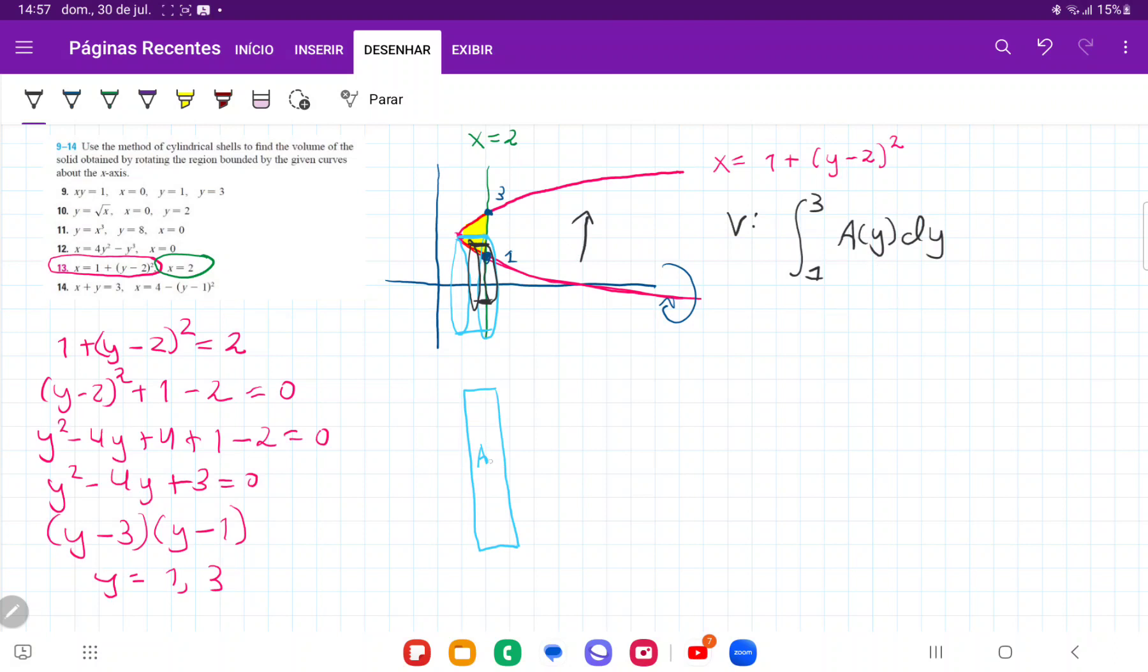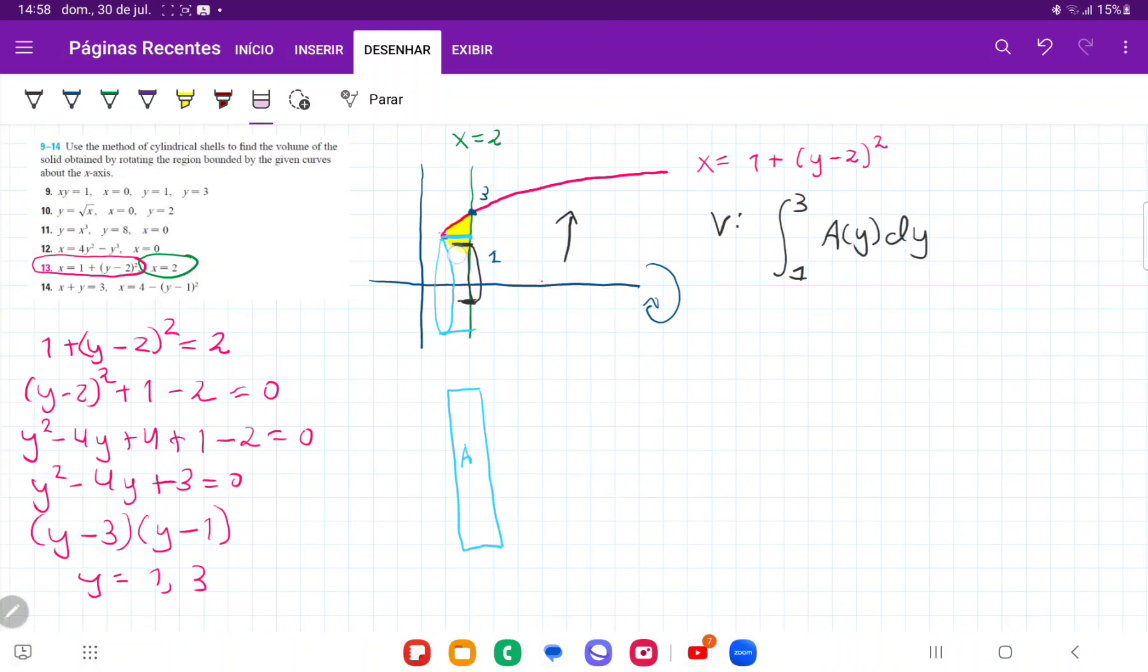Also A(y) because these areas are definitely functions of y. As you can see, as we move up the y-axis, the cylinders definitely change, so they change as a function of y, and we need to be able to express that. So let's think about how we're going to calculate this area as a function of y. Because if I have an expression for it, then I can sum it up in my integral.